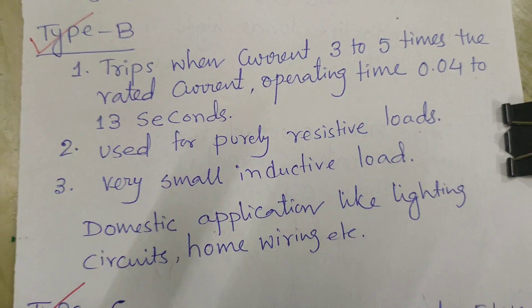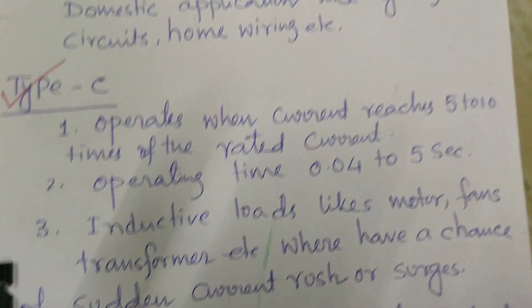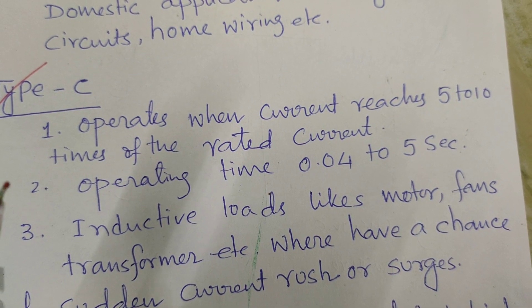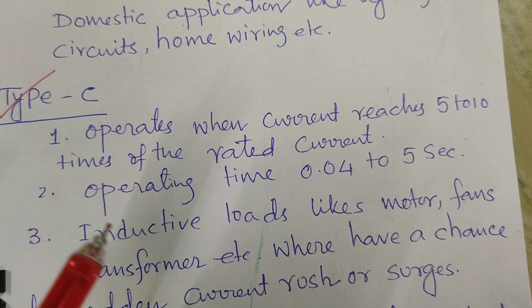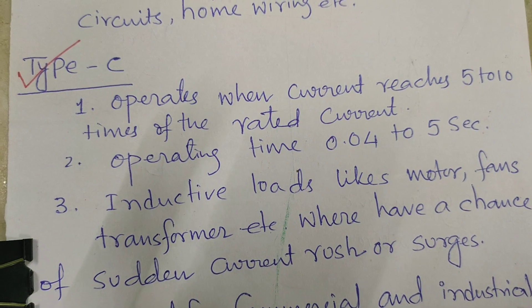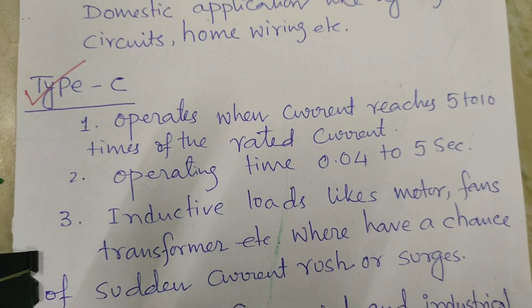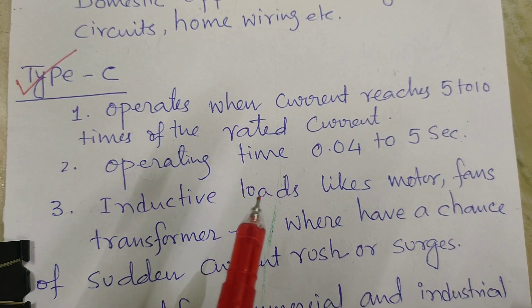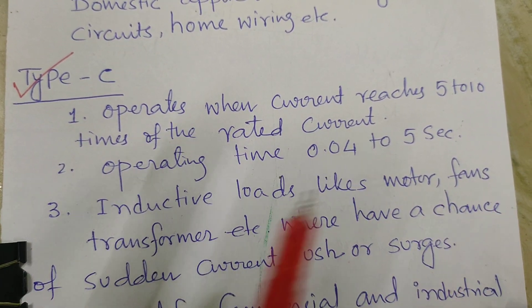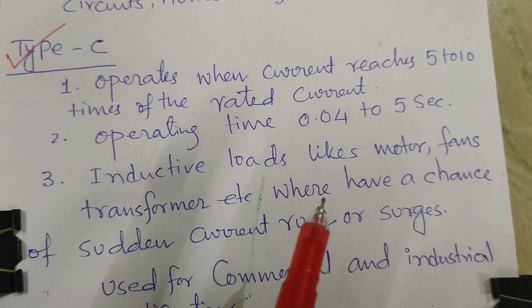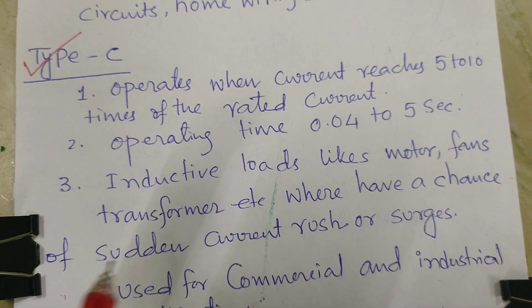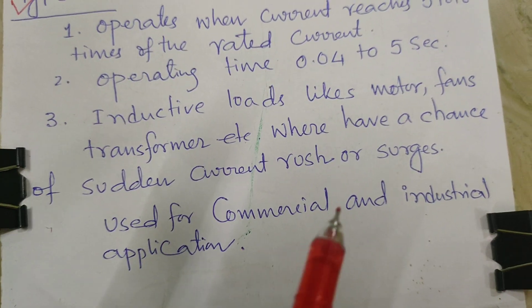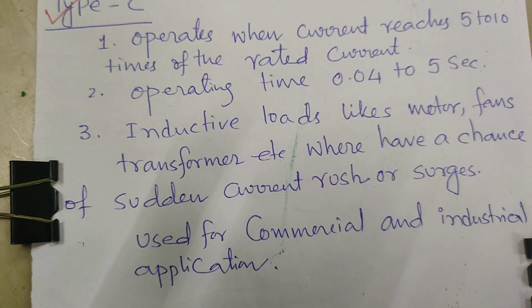C-type operates when current reaches 5 to 10 times of the rated current. Operating time 0.04 to 5 seconds. Inductive loads like motor, fan, transformers, etc., where have a chance of sudden current rush or surges used for commercial and industrial applications. C-type is being used for the commercial and industrial application.